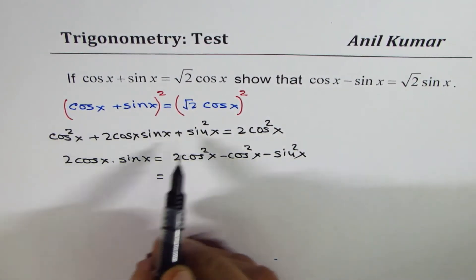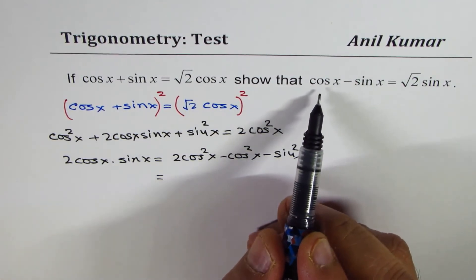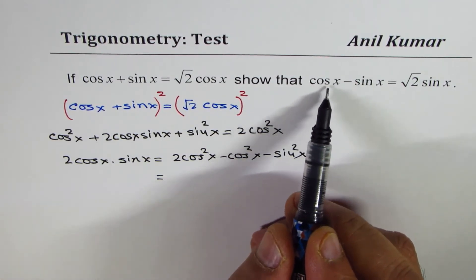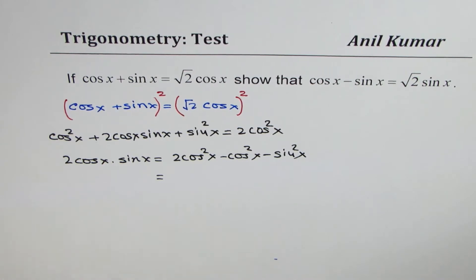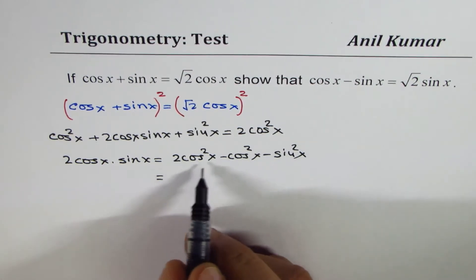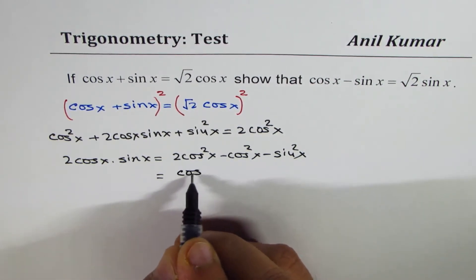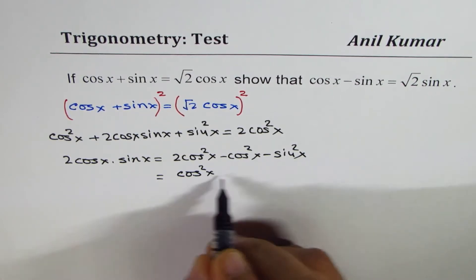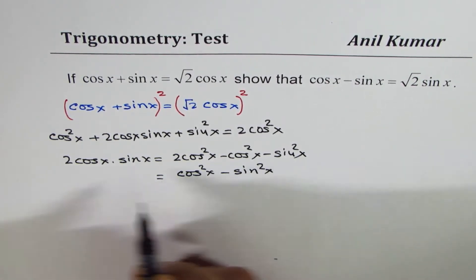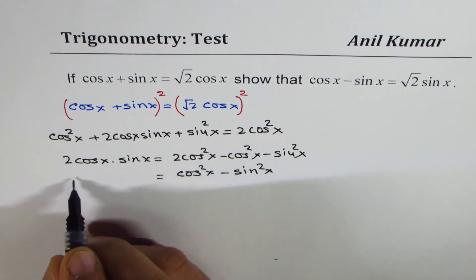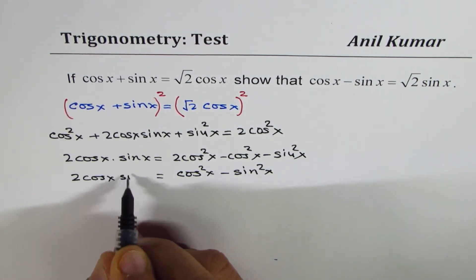We did not combine these two to make one because we need to find an expression for cos x minus sin x — this is kind of important. 2 cos²x minus cos²x is cos²x, and we have minus sin²x. So on the left side we have 2 cos x sin x.